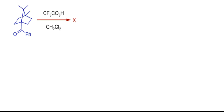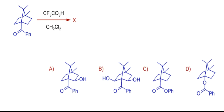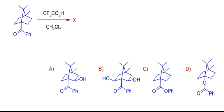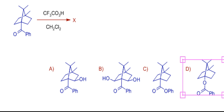When this ketone is treated with trifluoroperoxyacetic acid, Baeyer-Villiger rearrangement takes place. Options A and B show hydroxylated products, which don't occur under the given reaction conditions, so these two options are cancelled. Option C shows migration of phenyl in preference to the tertiary bridgehead carbon and is therefore cancelled. Option D is correct as it shows migration of the tertiary bridgehead carbon.